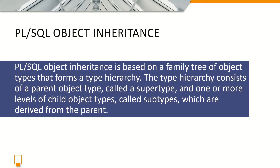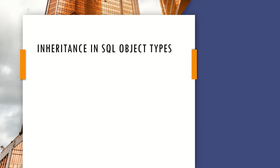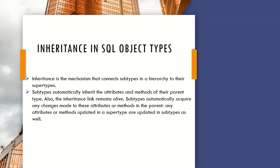This is an introduction to PL/SQL object inheritance. Inheritance in SQL object types is a technique which means step by step, moving to supertypes. When we have a supertype, we can inherit the parent's attributes and methods. Just like our family structure, we have a supertype and a subtype. With the inheritance system, if you have any changes, you can see them propagate.